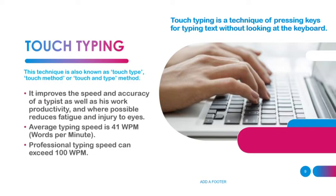A touch typist never looks at the keyboard. Their fingers hit the correct keys through muscle memory or by force of habit. If we take an accepted average typing speed, it will be about 41 words per minute, whereas a professional typist can exceed 100 words per minute. Don't worry — I am here to teach you how to become an expert at that.